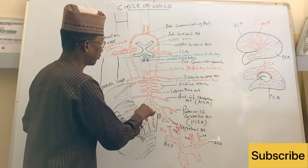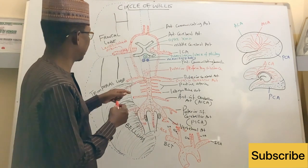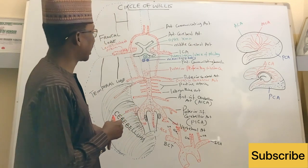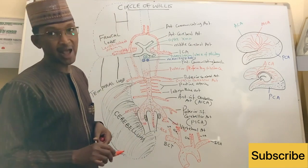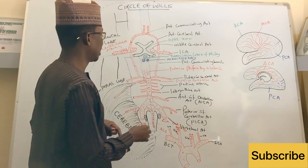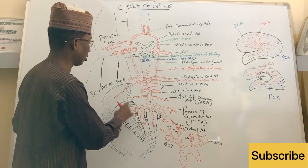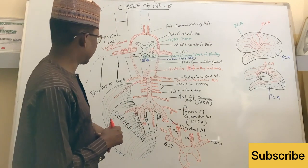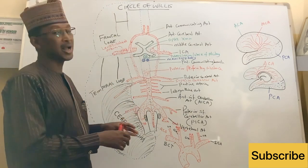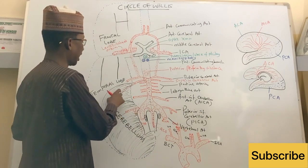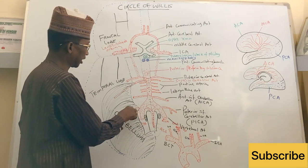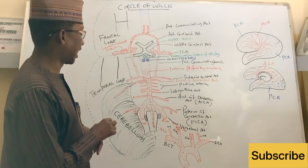Before each of the vertebral arteries unites with its companion, each artery gives rise to a branch known as the posterior inferior cerebellar artery — known as PICA. This PICA supplies the inferior surface of the posterior lobe of the cerebellum. The cerebellum has a posterior lobe and an anterior lobe, and the inferior surface of the posterior lobe is supplied by this posterior inferior cerebellar artery.